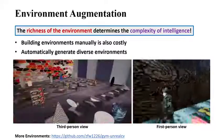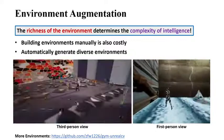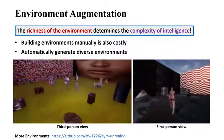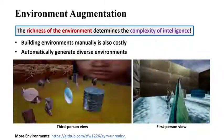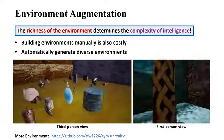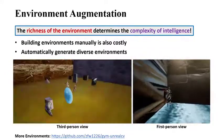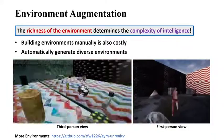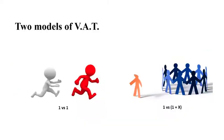The richness of the environment determines the capacity of intelligence. To train robust active trackers, we use environment augmentation technology to generate a large number of virtual environments by randomizing environmental factors — the number of objects in the scene, their shape and appearance, the layout of the scene, and even the dynamics. Next, we introduce two models: one for one target and one tracker, and another adding distractors.